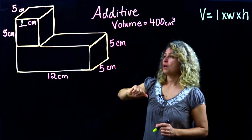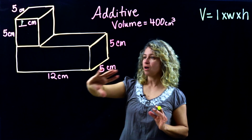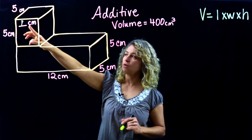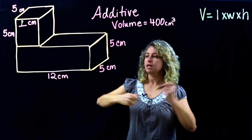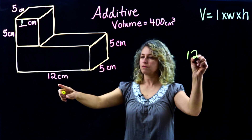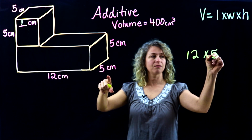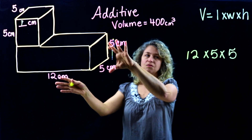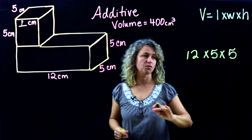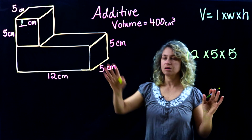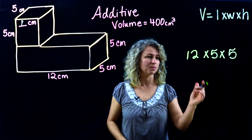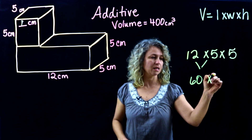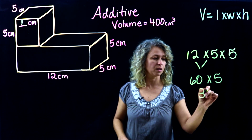On this next problem, the given information is that the additive volume is 400 centimeters cubed. We're given all the dimensions for one figure, but there's a missing dimension on the other. We have 12, 5, and 5, so we can go ahead and find the volume for this particular figure: 12 times 5 is 60, and 60 times 5 is 300.